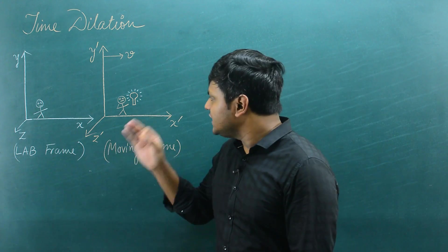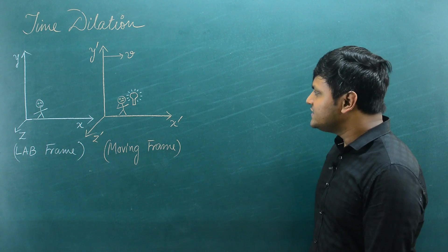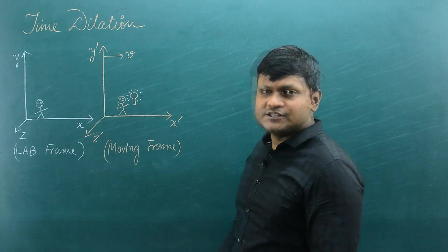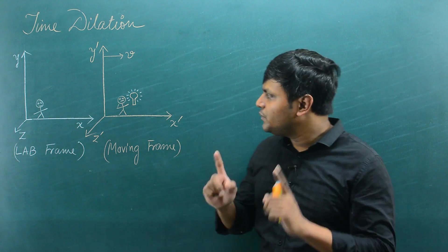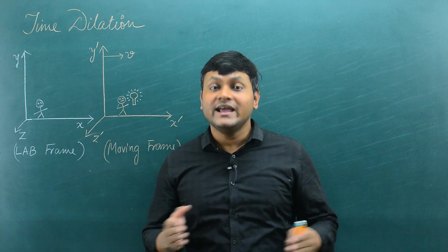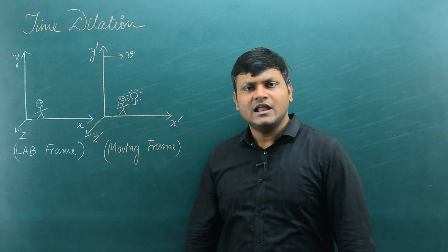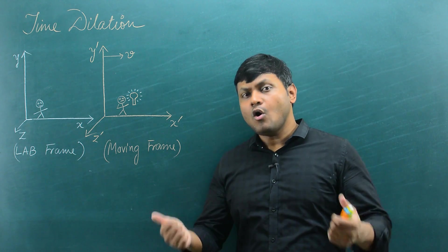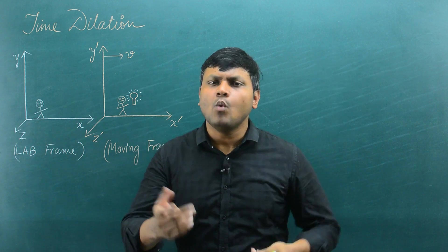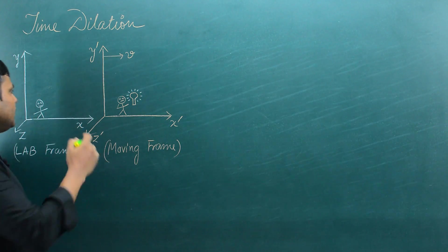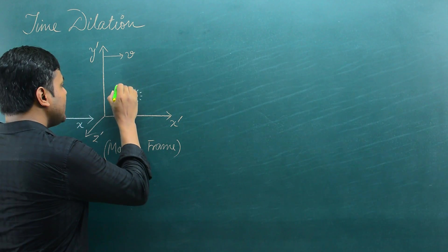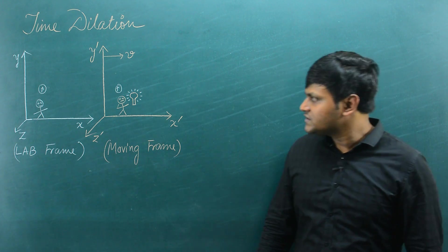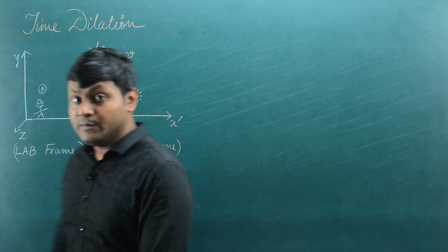At time t equals zero, the origins of both coordinate axes coincide. But because there is relative motion, the second frame starts moving forward as time passes. If I want to make measurements of some physical event from the perspective of both observers, those measurements will be related by the Lorentz transformations. Both observers have their own synchronized clocks to measure the time period between different physical events.